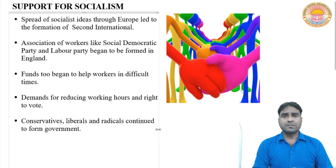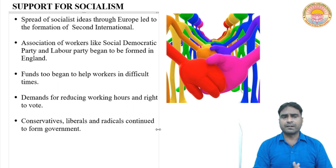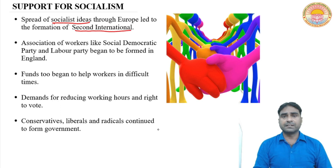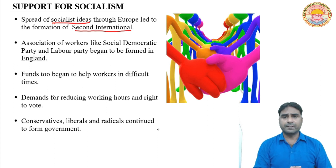Socialism ideas started to spread in different parts of Europe and these ideas attracted many peoples of the world. The citizens of many countries were totally affected and impressed by the ideas of socialism. To spread the socialist ideas, the socialist people formed an organization known as the Second International, formed to spread socialism in different parts of Europe, and many workers' unions were created and founded.